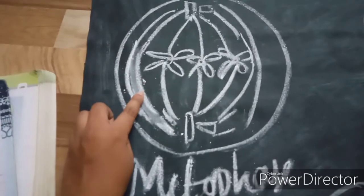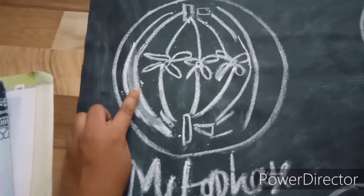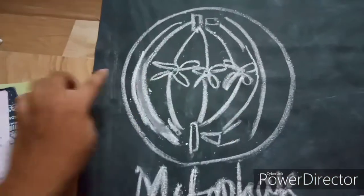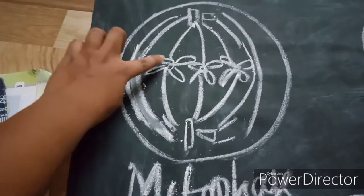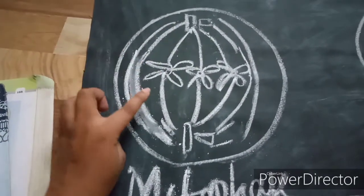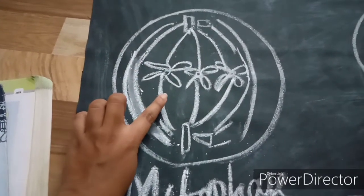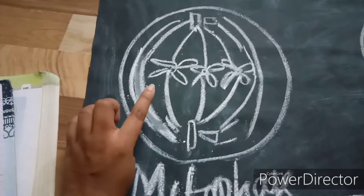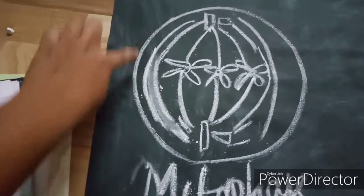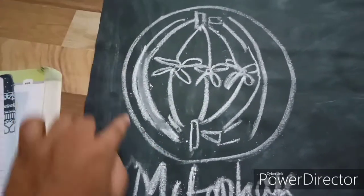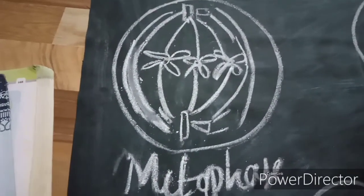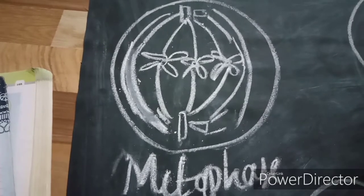In metaphase, the chromosomes are present at the equatorial region. The spindle fibers attached to the centromere are known as discontinuous spindle fibers or chromosomal spindle fibers. The spindle fibers extending from one pole to the other are known as continuous spindle fibers.